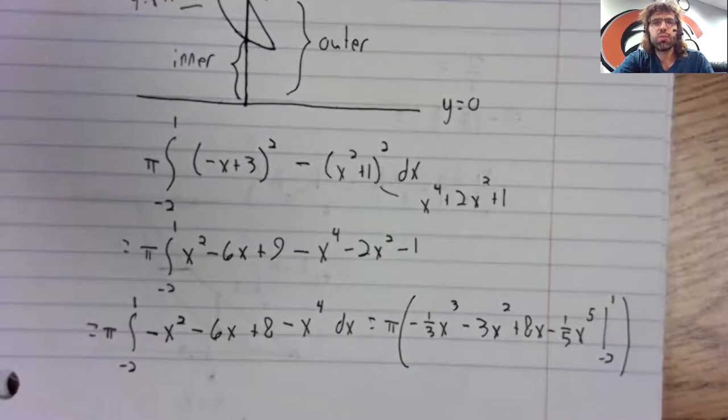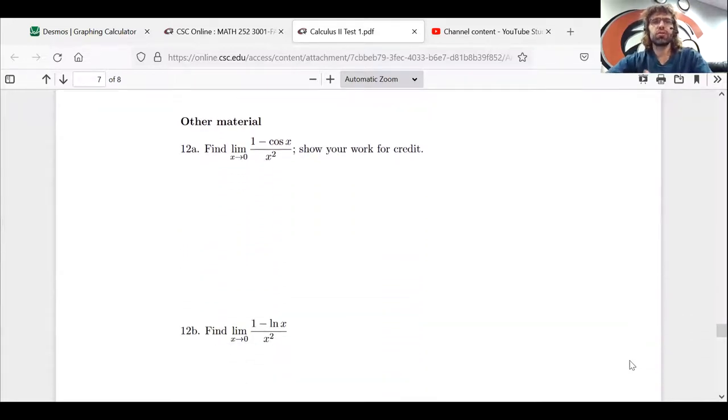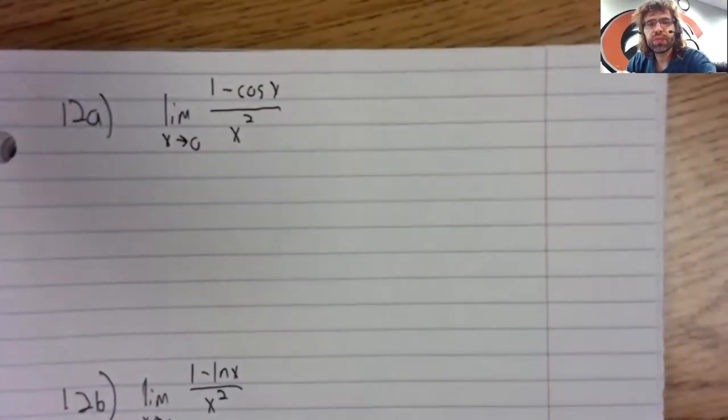The next problem is L'Hopital's rule. So 12 of A and 12 of B. I'm not trying to trick anyone, but there's a reason there's an A and a B. Let me copy these both down and share my notebook.